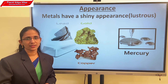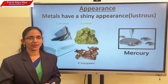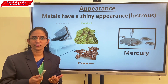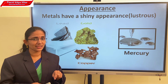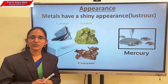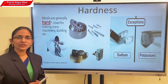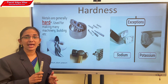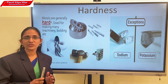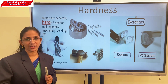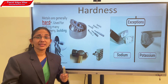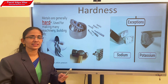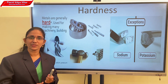The next property is hardness. Can you break an iron nail easily? No, we have to apply more force — that means the material is very hard. Most of the metals are very hard, and because of this hard nature they are used for making tools, machineries, and in buildings. There are exceptions: sodium and potassium are soft metals that can even be cut with a knife. Mercury is also a soft metal.